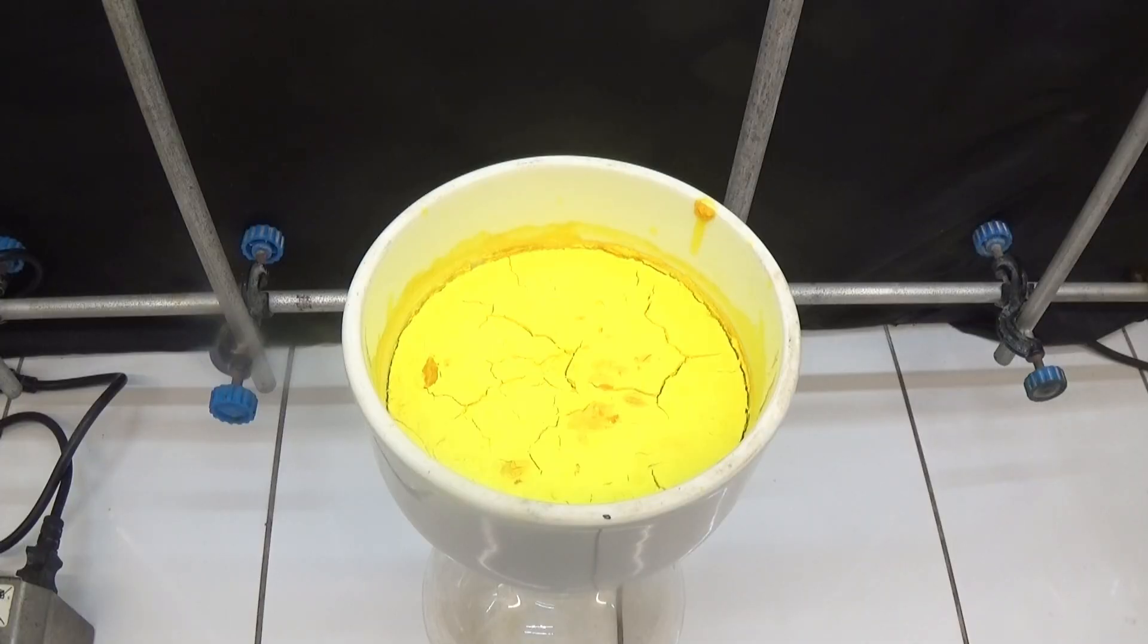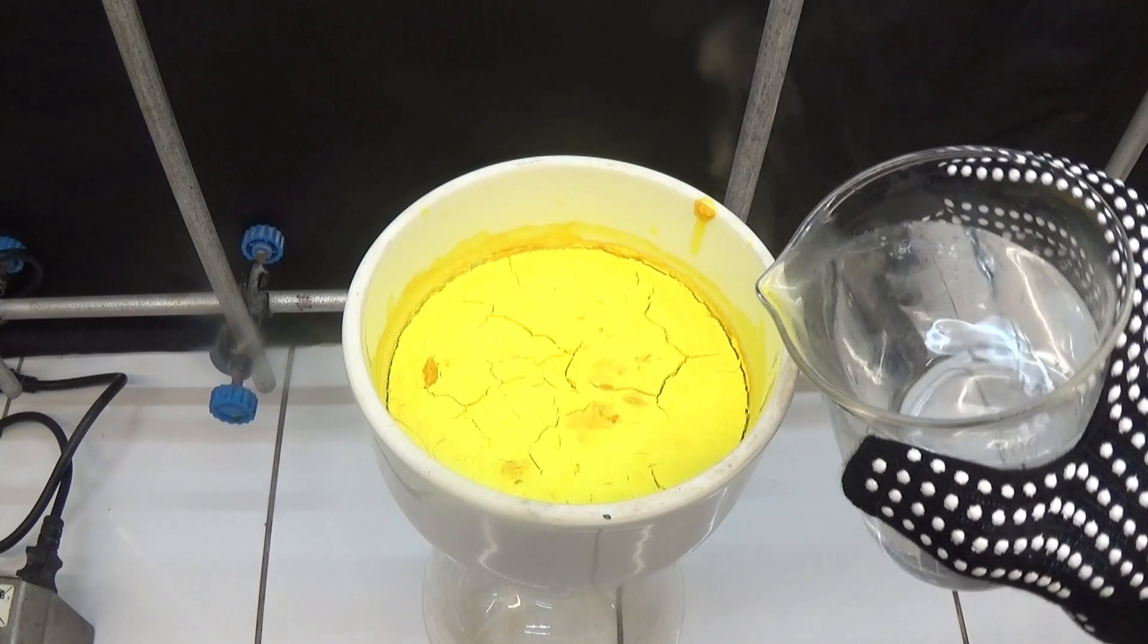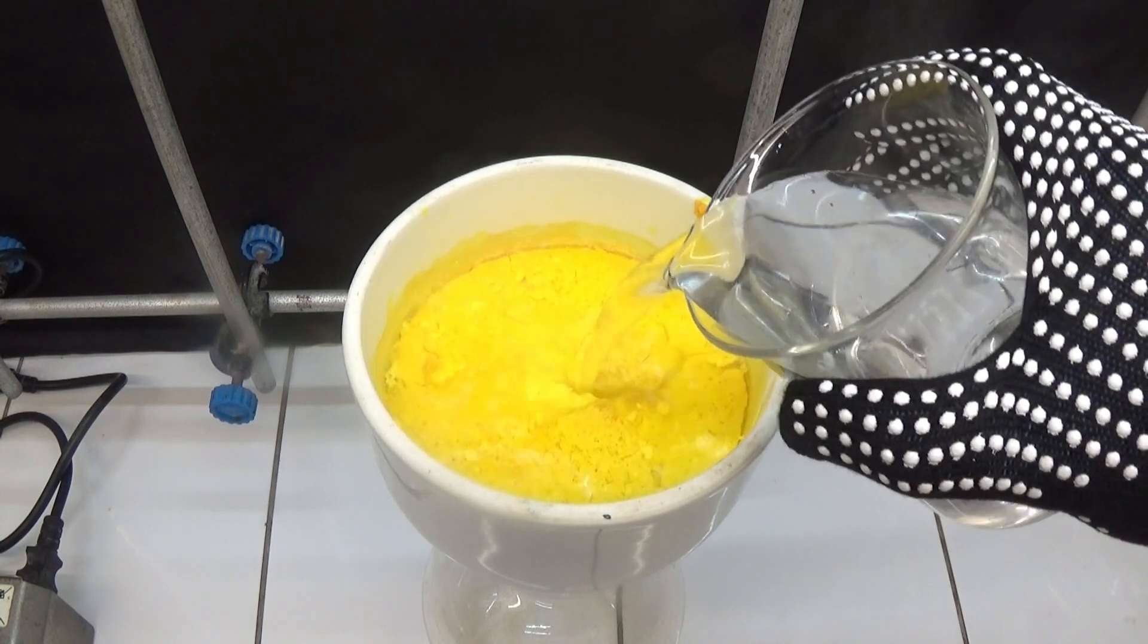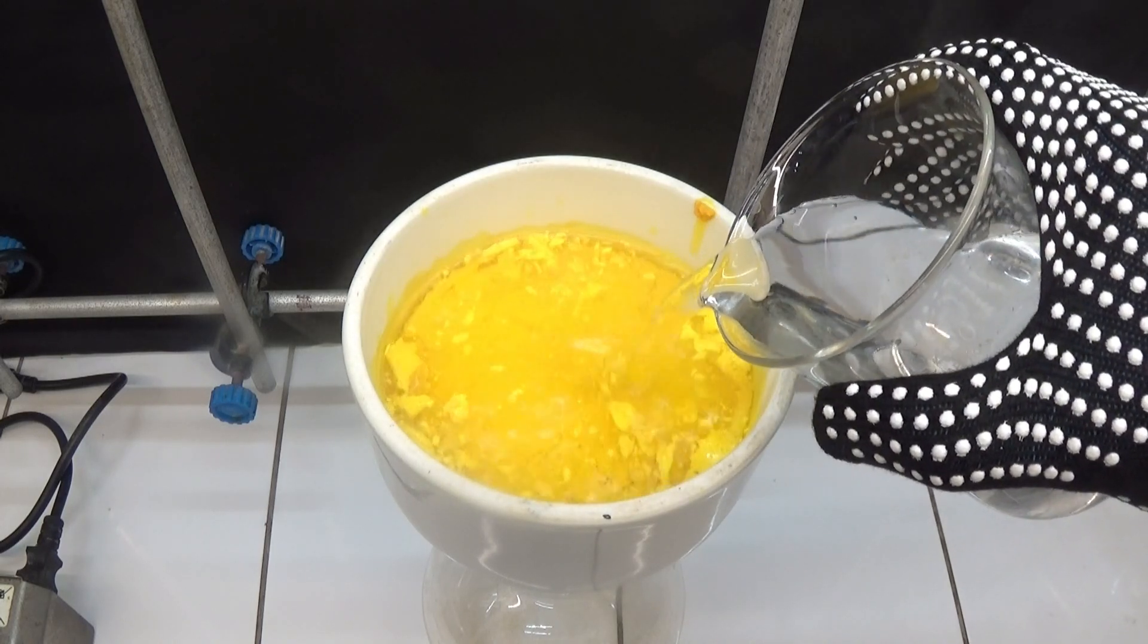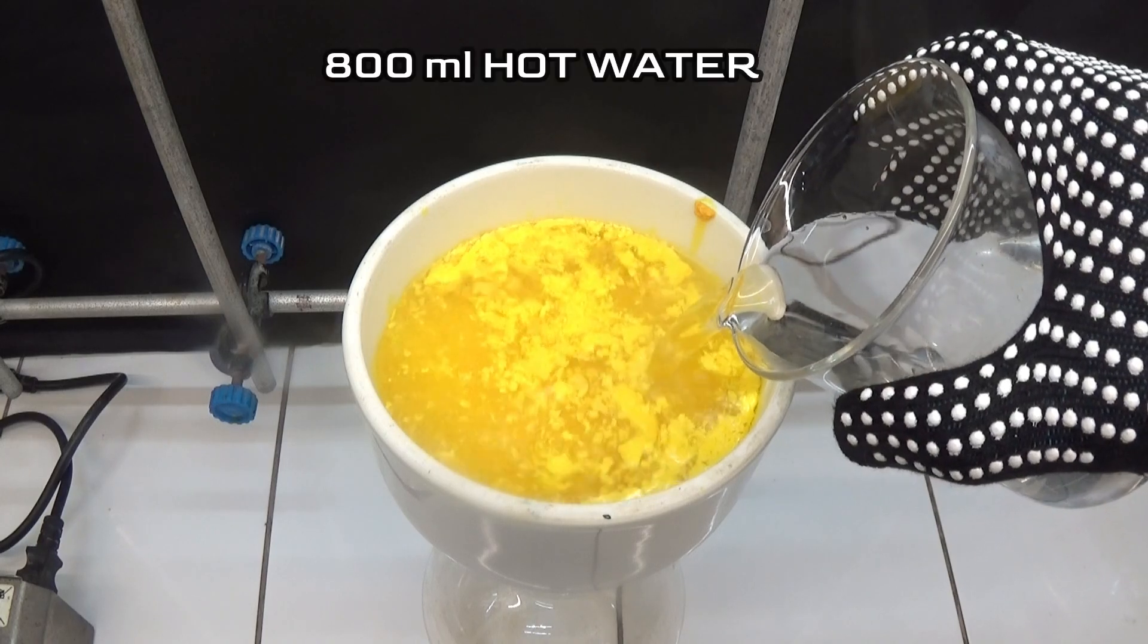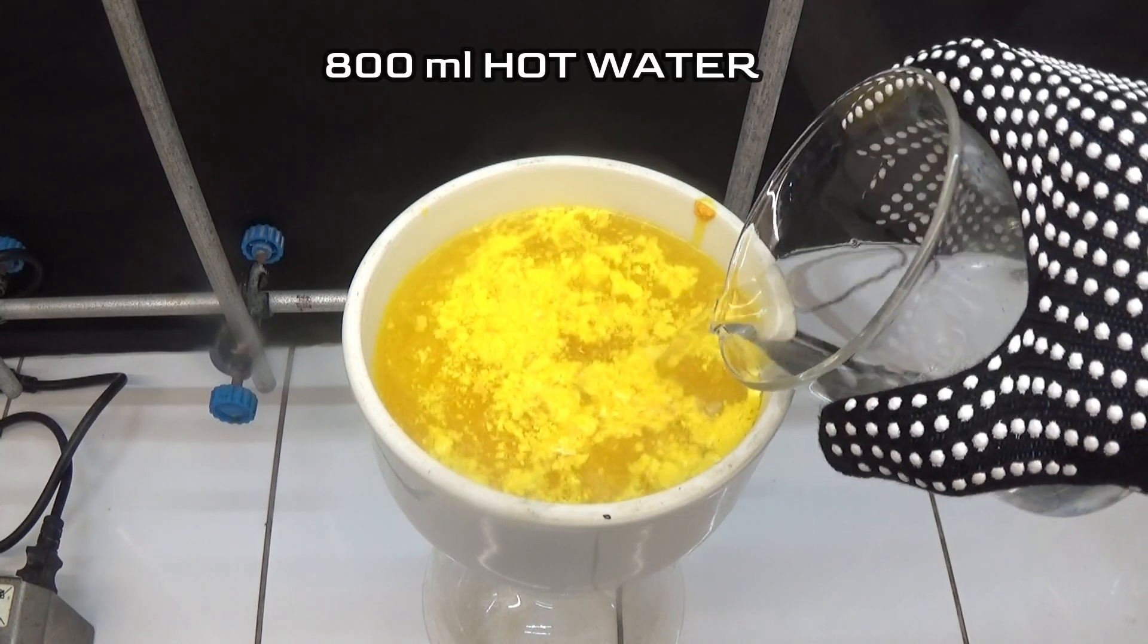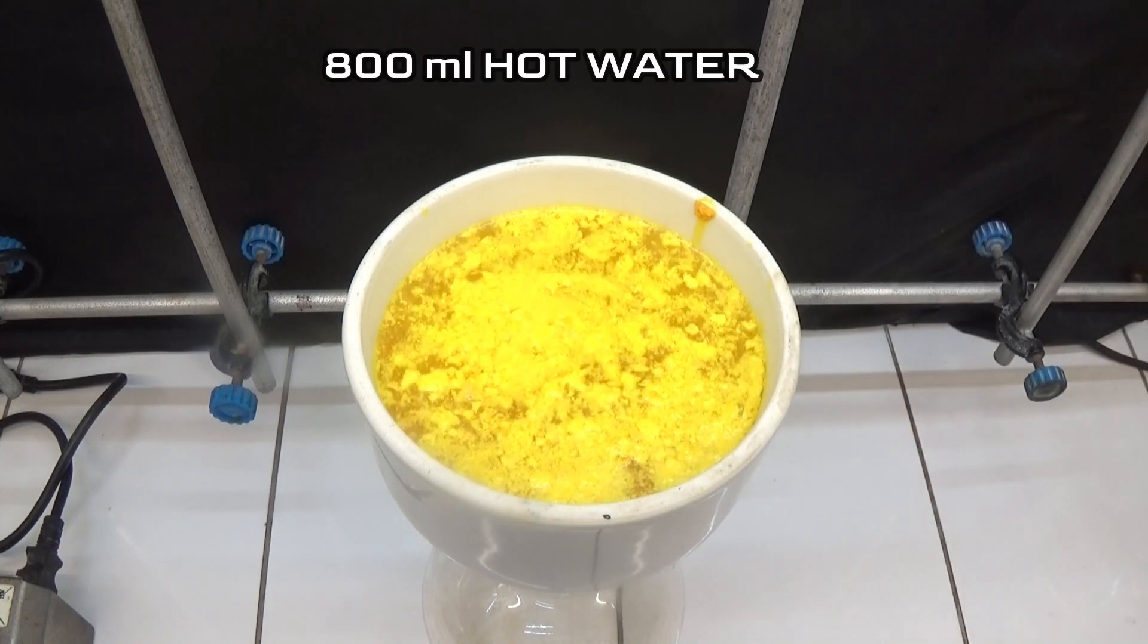After the first part of the operation, we must decarboxylate 1,3-dioxo-2-indanecarboxylate in an acidic medium to obtain 1,3-indandione. 800ml of hot water is used to dilute the yellow solid.